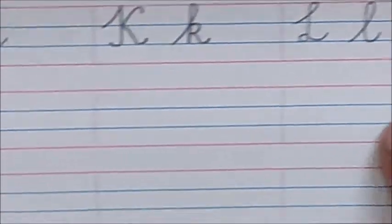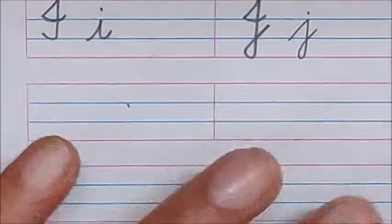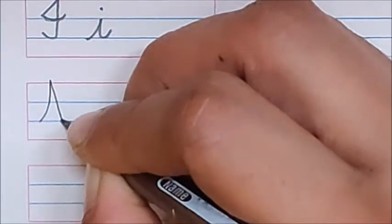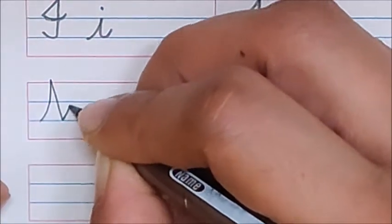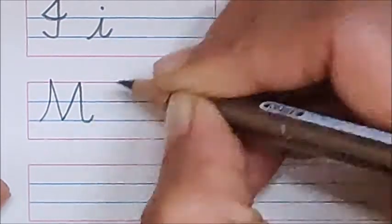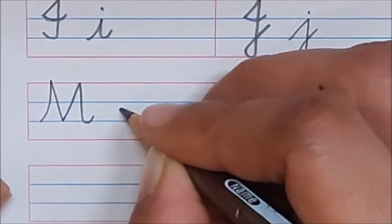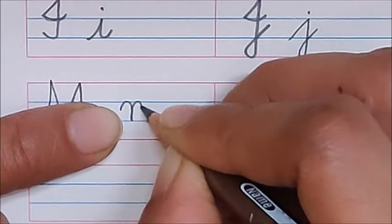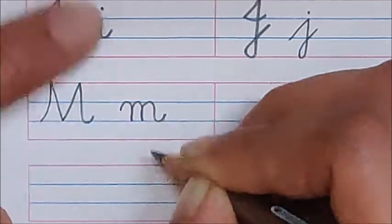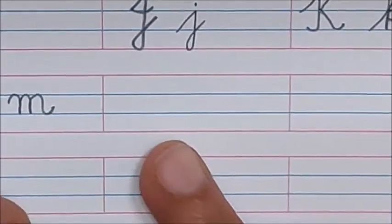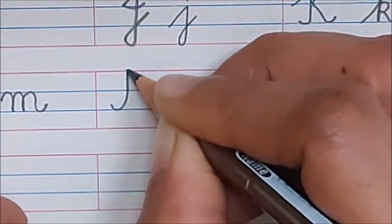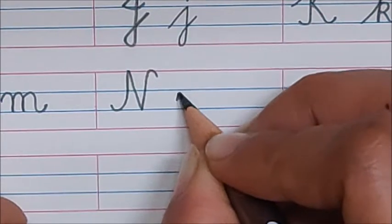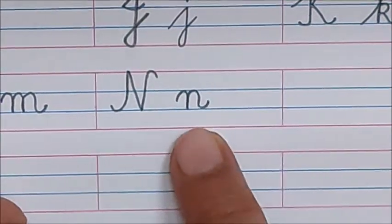Now, what comes after L? M. Go to the next row. Here, let us write M. Go up. Come down. Touch the last blue line. Again, go up, down, and tail. M. And here, write down small M. Small hand. Don't make a big hand. Now, go down, up, down, up, down, and tail. M. Now, write down here, N. How to write N? Go up. Down. Up. And just bend a little. N. Write the lowercase N also.